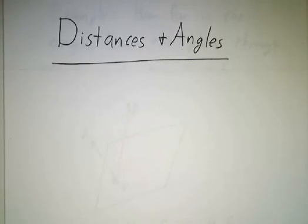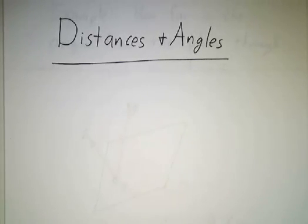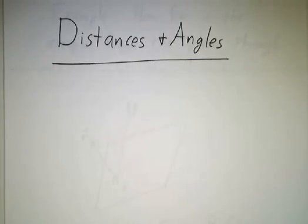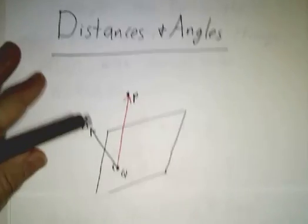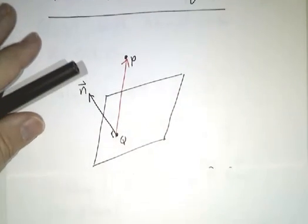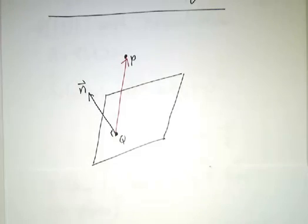Now that we understand the equations of lines and planes, we're going to use these equations to figure out the distance between a point and a plane, or the distance between a point and a line, or the distance between two planes, or the angle between two planes. So let's start with the problem of figuring out the distance from a point to a plane.